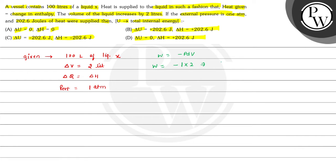This equals -2 liter·atm. If we convert this value into joules, 1 liter·atm equals 101.3 joules. So W = -2 × 101.3 = -202.6 joules. This value comes out to be negative, so W = -202.6 joules.